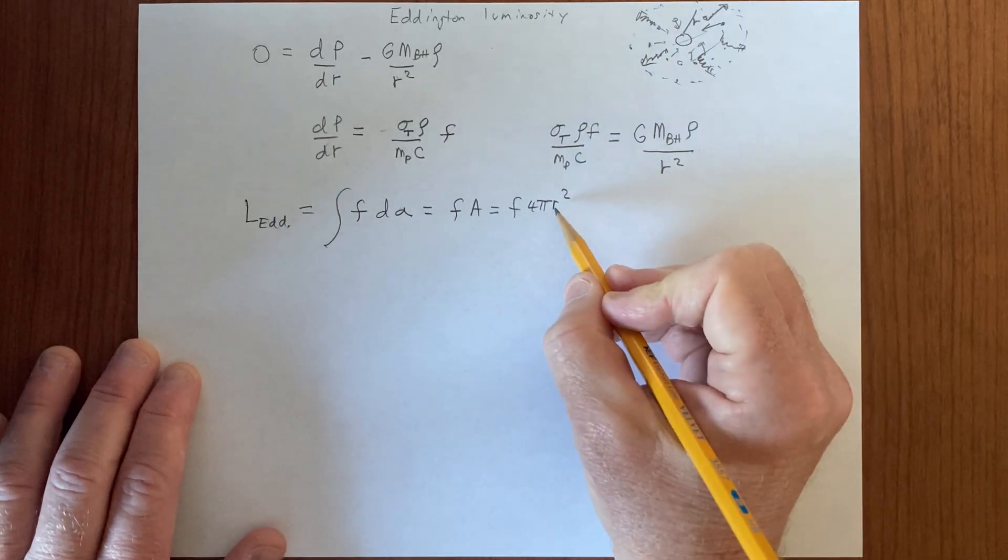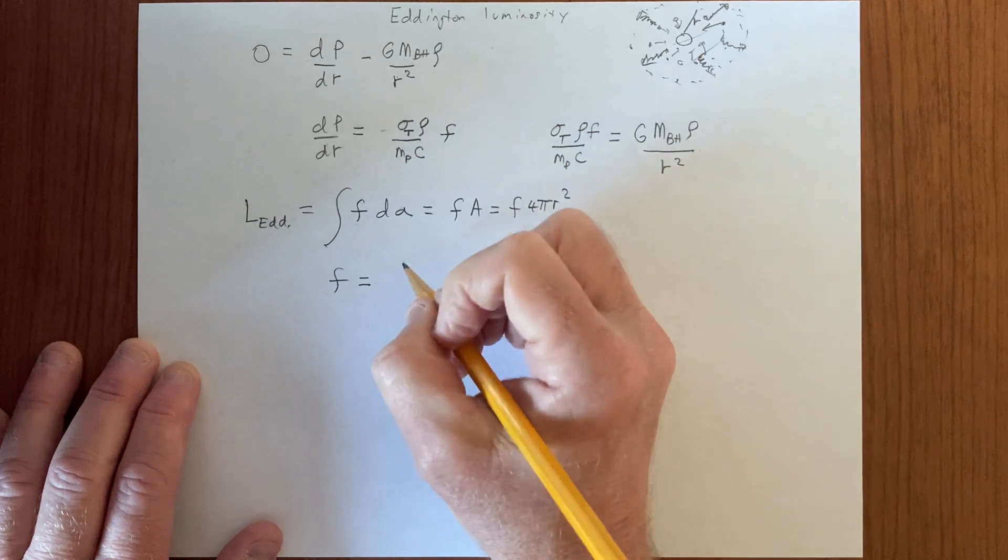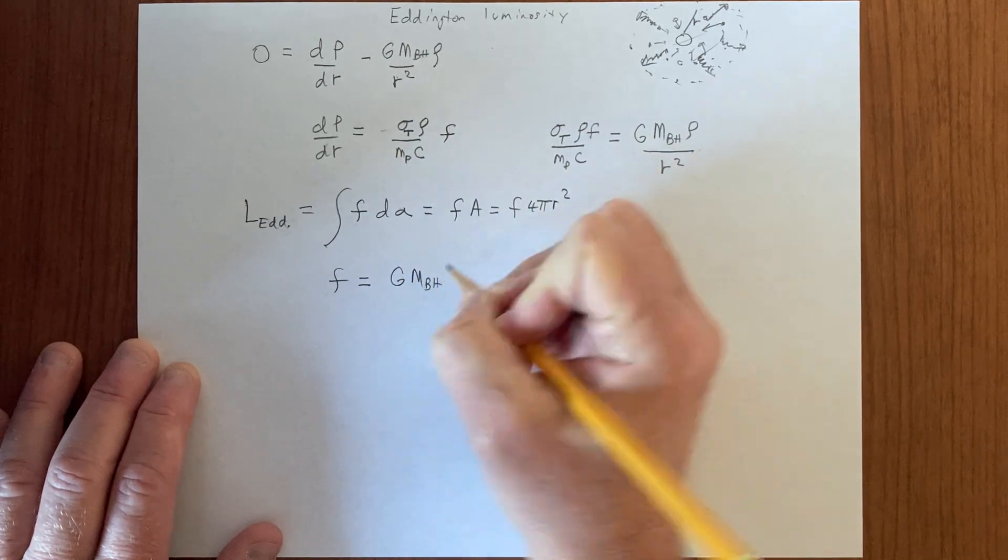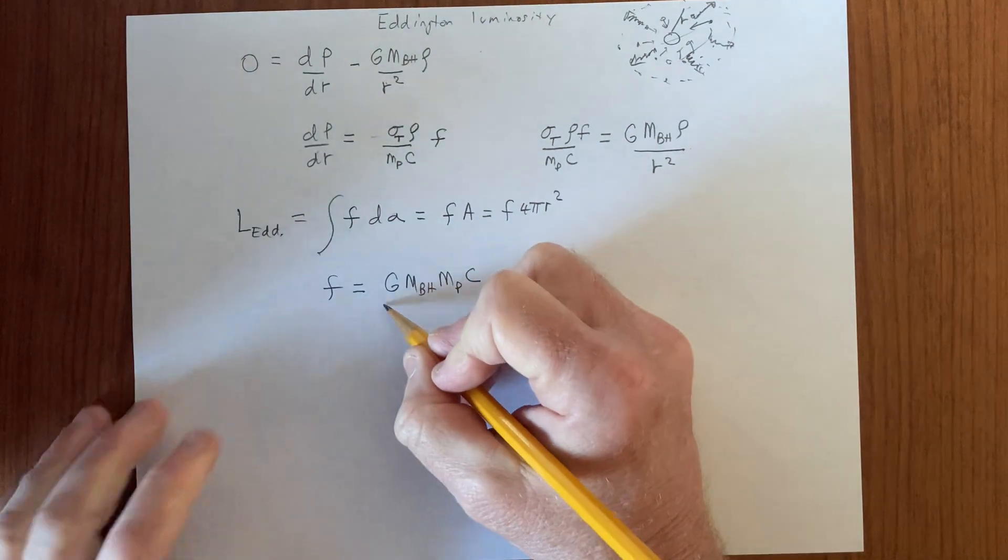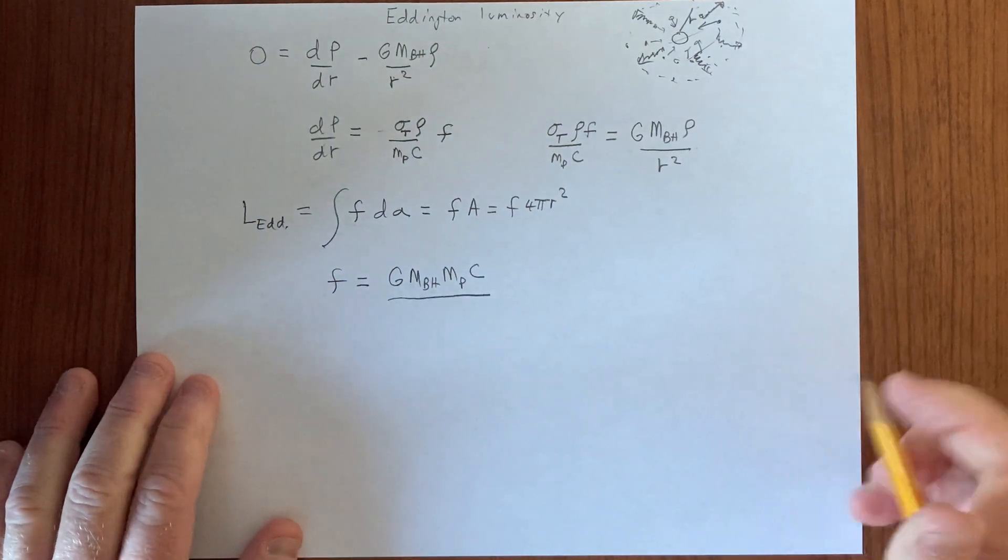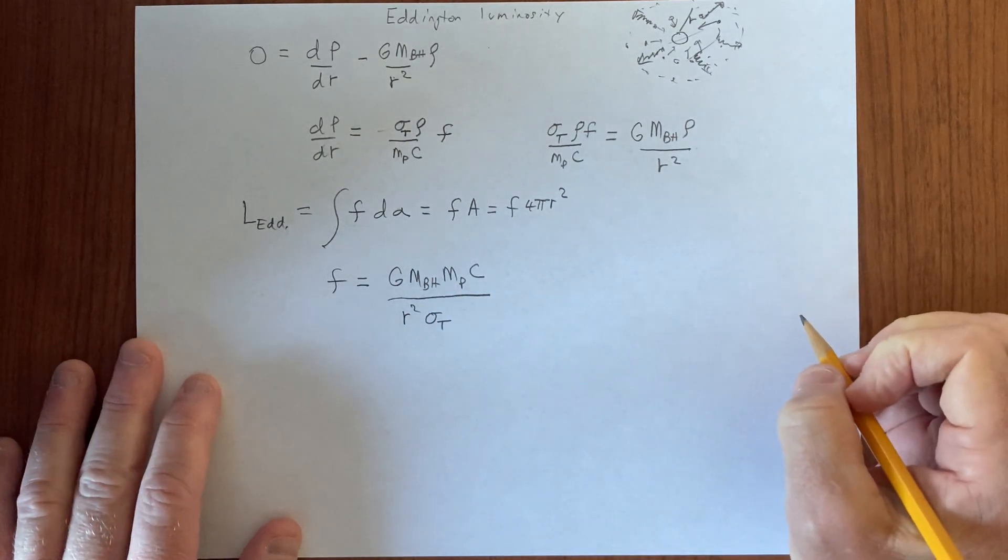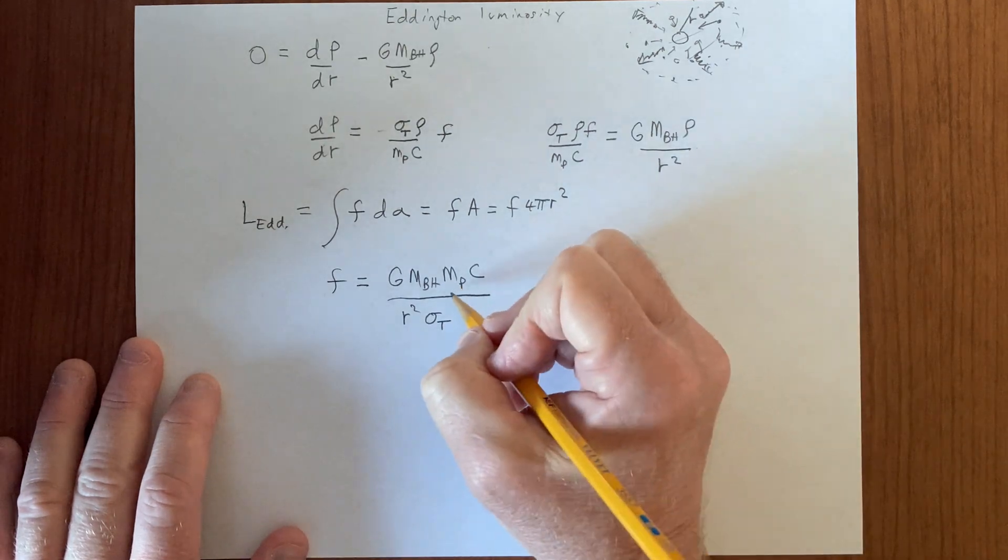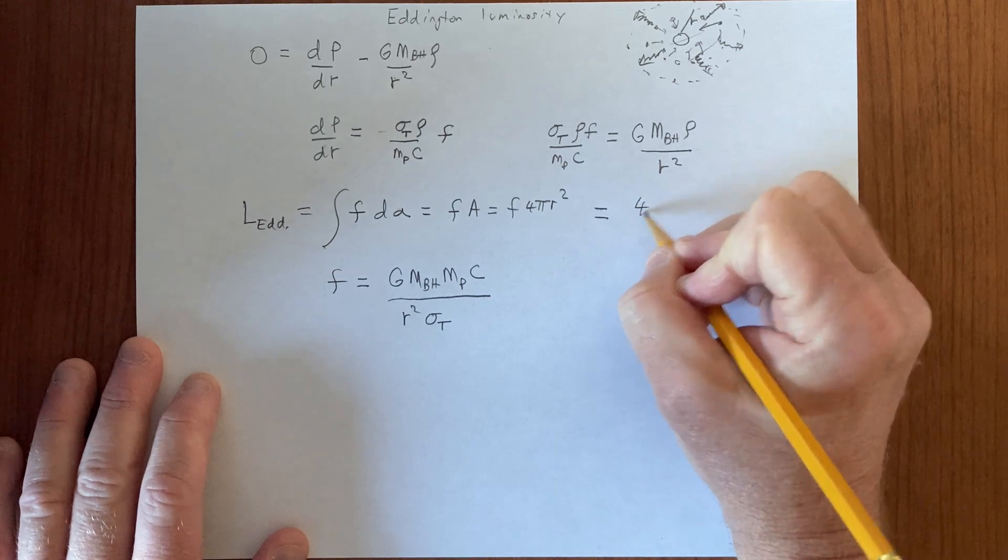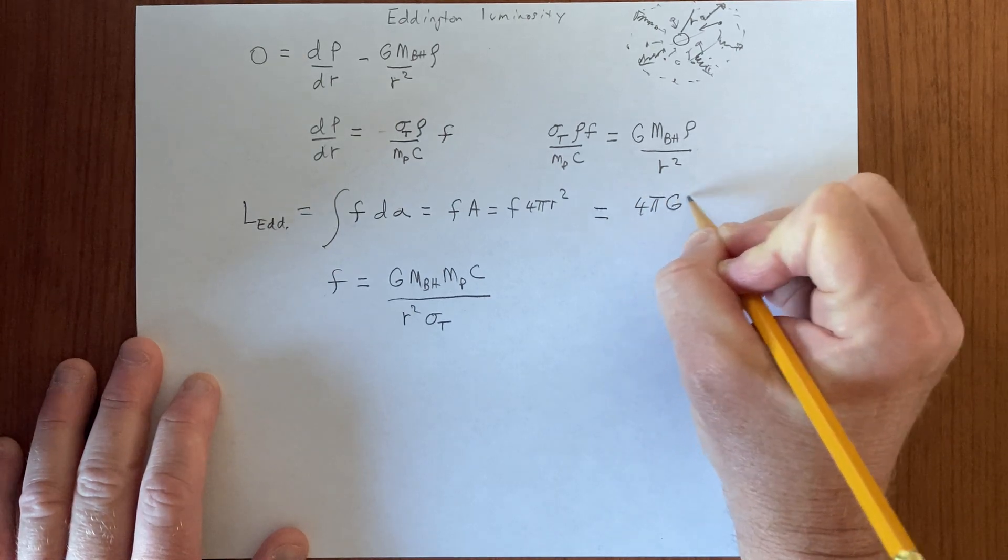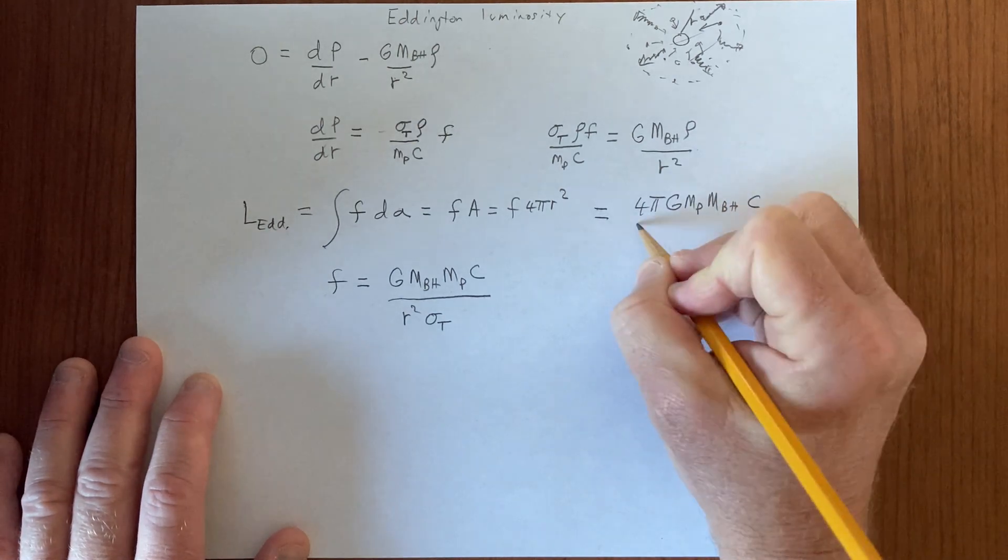What is the flux? The flux from this gives us g m black hole, mass of the proton, speed of light, r squared, the cross section. We'll put this into here, and therefore we get that the luminosity, or the Eddington luminosity is 4 pi g, mass of the proton, mass of the black hole, c over sigma.